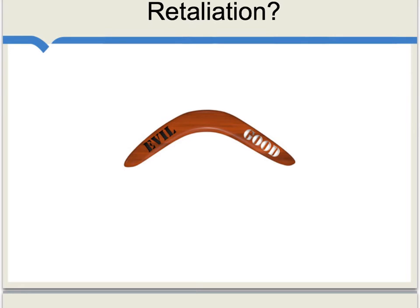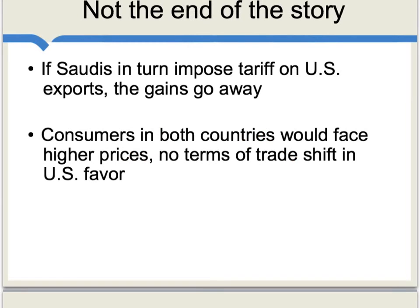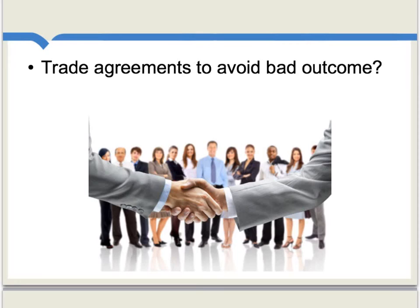Of course, in the real world this is not so simple. One problem is quite simply that the other country — the Saudis in this example — may retaliate. Imagine the Saudis, or maybe a bunch of other countries acting in concert, impose a tariff on U.S. exports. In that case, these terms of trade gains may go away. We'd end up with a situation where consumers in both countries face higher prices, and there's not necessarily a terms of trade shift in favor of the United States. One rationale for free trade agreements and free trade zones is simply that they help us avoid these mutually destructive outcomes, whereby individual countries try to shift the terms of trade in their favor, but they all do this and no one ends up better off.